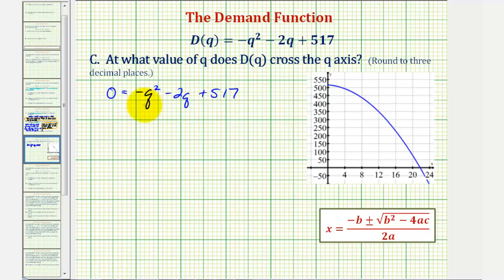Now to solve this equation, this is not factorable, so we'll have to use the quadratic formula. Where A equals negative one, B equals negative two, and C equals 517. But there is one thing we should notice here. Q represents the quantity in thousands, and we know Q can't be negative, so we're only looking for the Q intercept in the first quadrant, where Q would be positive.